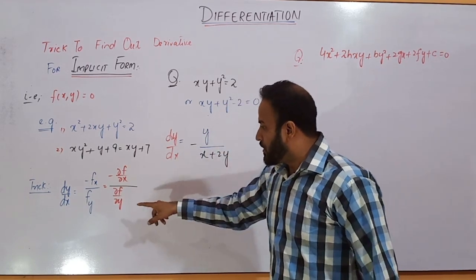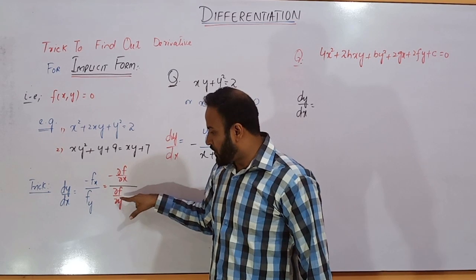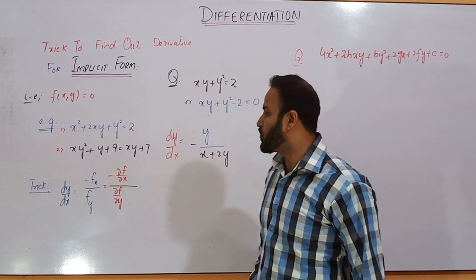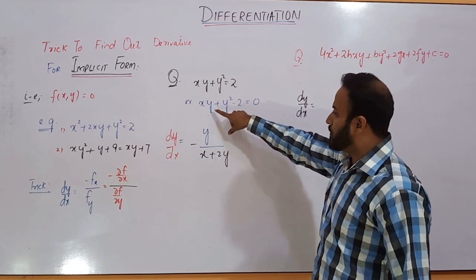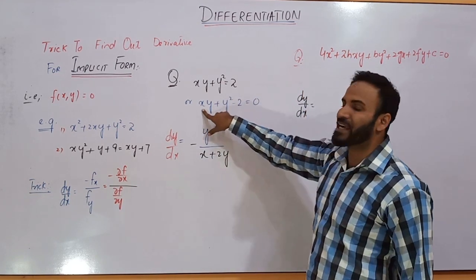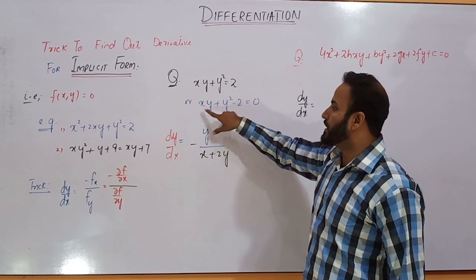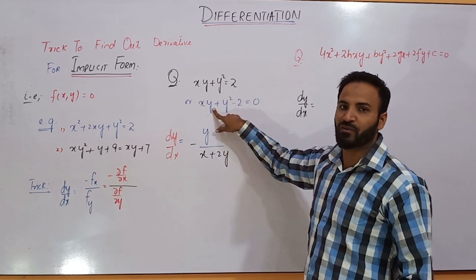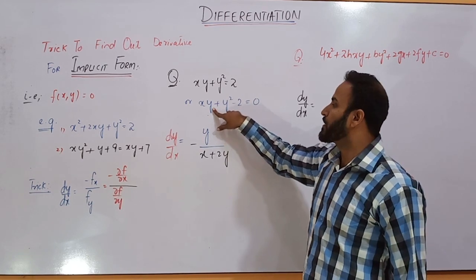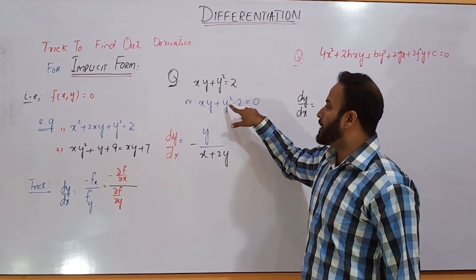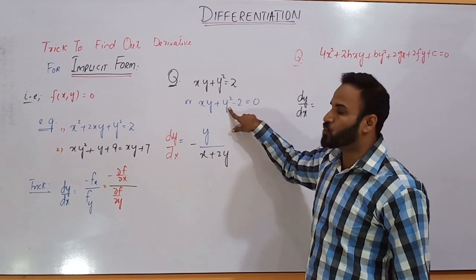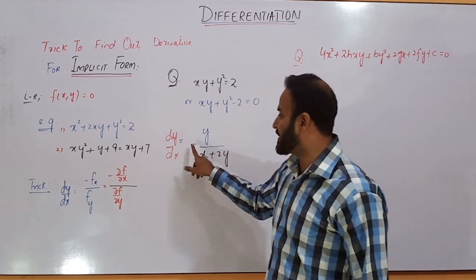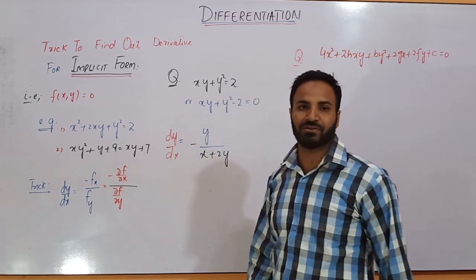Next, I want to find out the derivative of this function with respect to y. With respect to y, x behaves like a constant. The derivative of this term will be x, because the derivative of y with respect to y is 1, the derivative of y squared will be 2y, and the derivative of 2 will be 0. So the answer is x plus 2y, and here is the negative sign according to the trick rule.